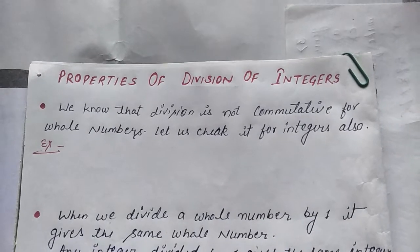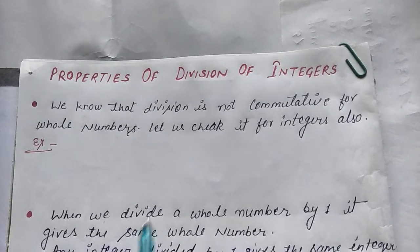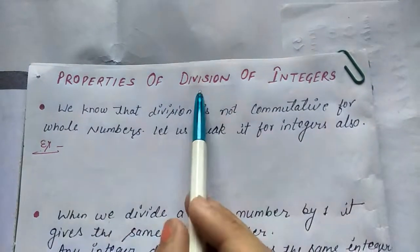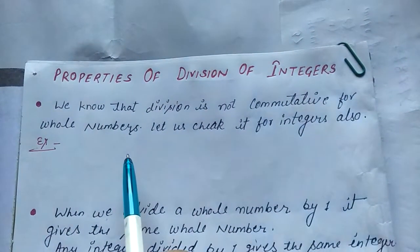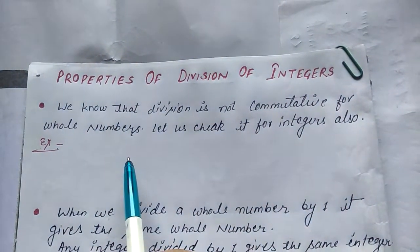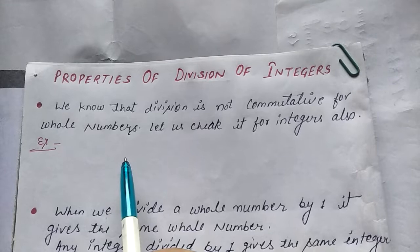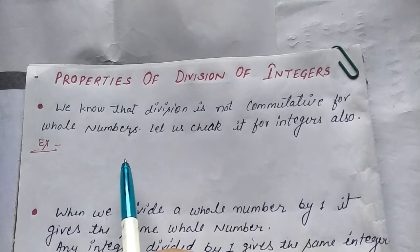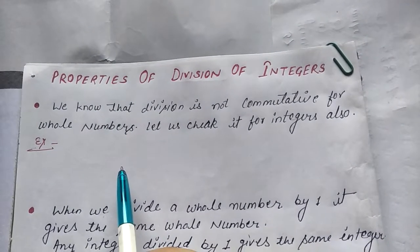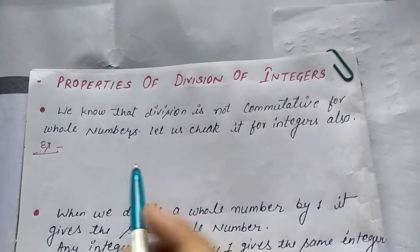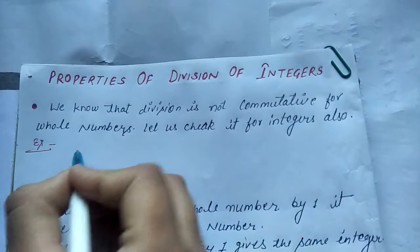Good morning students. Today we discuss the properties of division of integers. First property — we know that division is not commutative for whole numbers. Let us check it for integers also. Now take some examples.